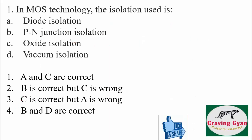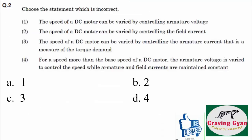In MOS technology, the isolation used is: first option diode isolation, second option p-n junction isolation, third option oxide isolation, fourth option vacuum isolation. We know in MOS technology we make use of oxide isolation, so option C is correct.